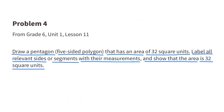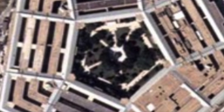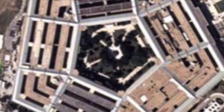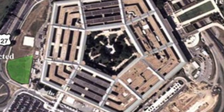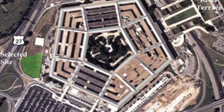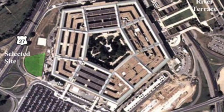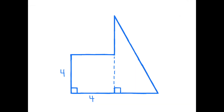Number 4: draw a pentagon — a five-sided polygon — that has an area of 32 square units. Label all relevant sides or segments with their measurements and show that the area is 32 square units. When I think of a pentagon, I think of the government building with five equal sides. That would be difficult to draw with exactly 32 square units, so I'm going to come up with a different shape that has five sides — specifically a shape that combines a square and a triangle.